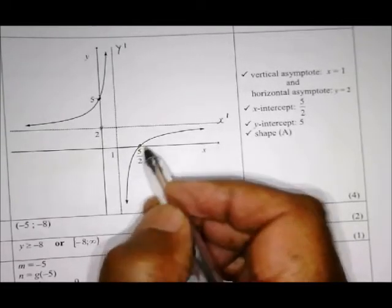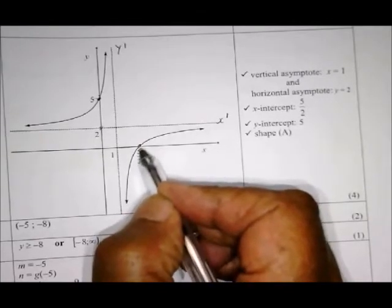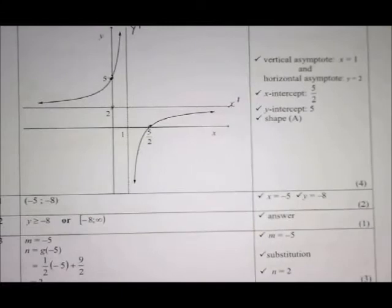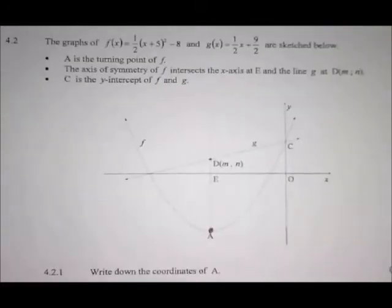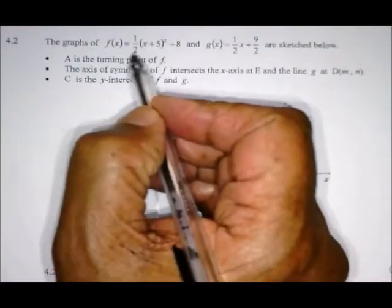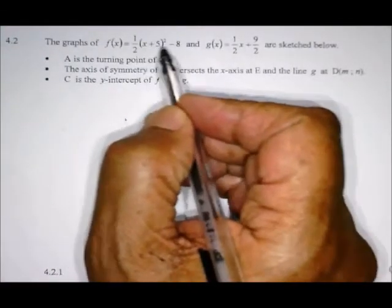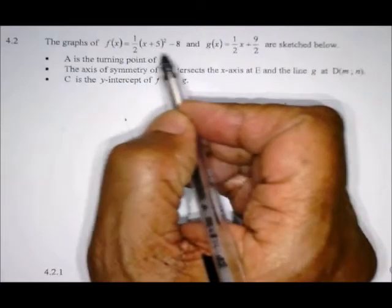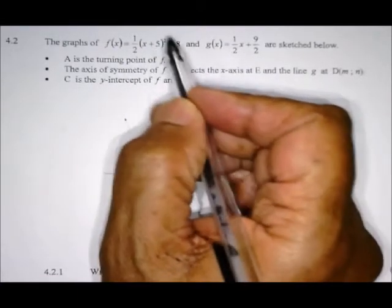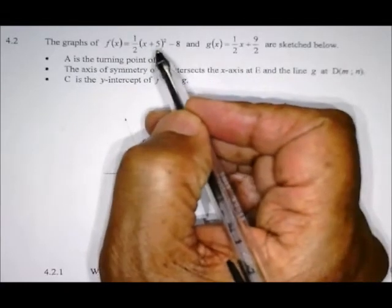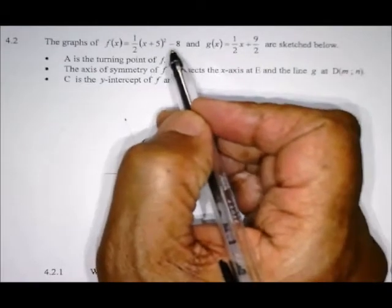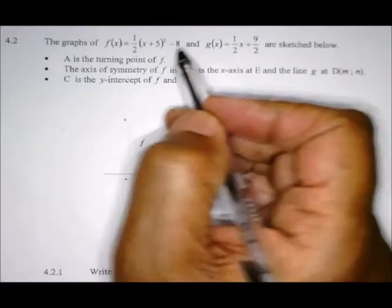4.2.2: Write down the range of f. Remember, range are values that lie in the y direction. Domain is in the x direction. So it starts from the lowest y value which is -8 and goes up to infinity. Therefore, the range is y ≥ -8, or in interval notation [-8, ∞) with a square bracket for -8 because we include it, and round bracket for infinity because we cannot include infinity.